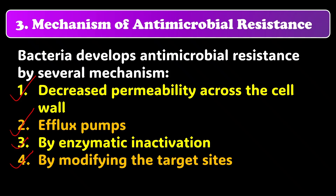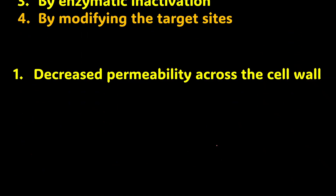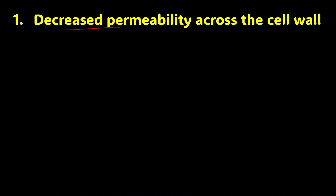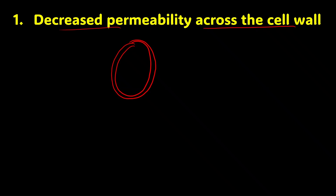Let's start with the very first mechanism: decreased permeability across the cell wall. In the bacterial cell membrane, there are certain channels present — these are called porin channels. In this mechanism, the bacteria makes modifications in these channels.